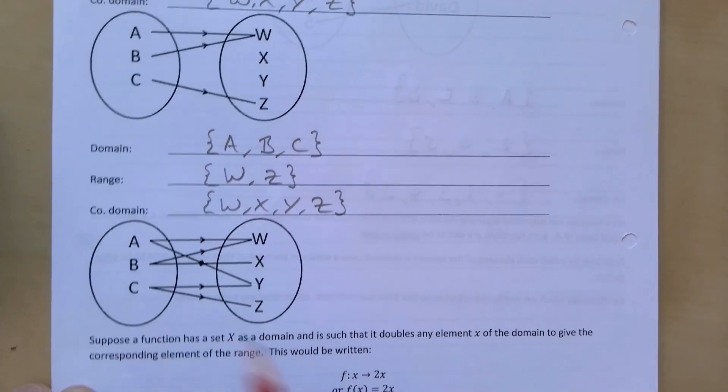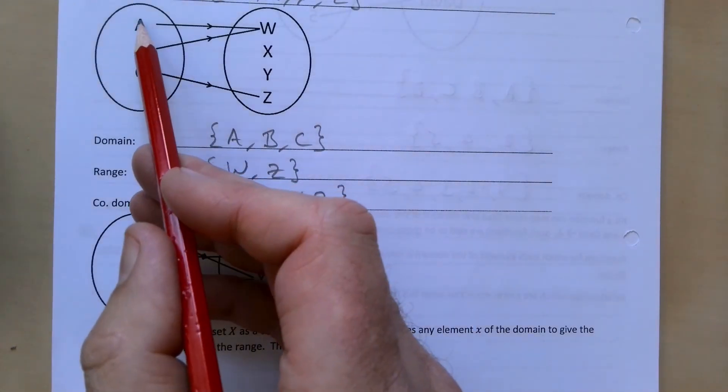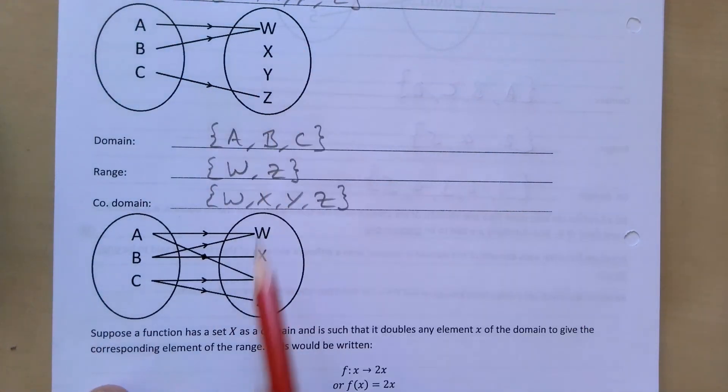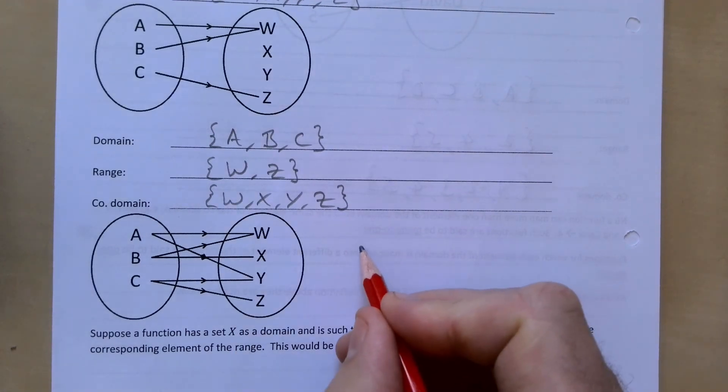And this one here isn't a function, and hopefully you can see why. Because from here it has to go to one and only one element. A is going to 2, B is going to 2, and C is going to 2 as well. So this one here is not a function.